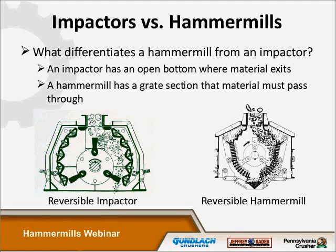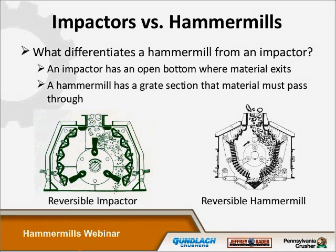We consider an impactor an open-bottom machine that crushes strictly in impact and relies on the friability of the material and the speed of the crusher to do the reduction. A hammer mill in our product line is a machine that has an internal sizing mechanism to control the output sizing. This may be a screen plate, a screen bar, or a grate section, but all material needs to pass through it before exiting the crusher.